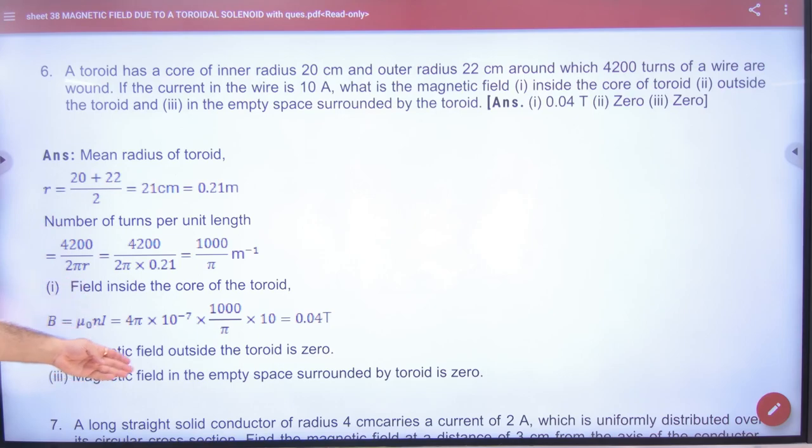Next, outside the toroid, you know it will be zero, and empty space surrounding the toroid is also zero. It is on the axis.